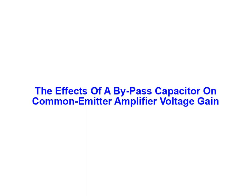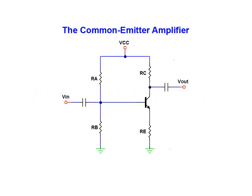In this animation we will be examining the effects of a bypass capacitor on common emitter amplifier voltage gain. Here we have the basic voltage divider biased common emitter amplifier circuit. The circuit consists of four resistors and an NPN bipolar junction transistor.